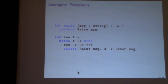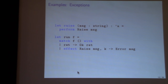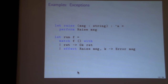A simple example is exceptions. There's one operation, raise, which takes a string and returns any type at all because it won't actually return. You can run that by matching: in the return case you return OK of the value, and if it performs a raise with a message you throw the continuation on the floor and return error of that message. This gives you the same basic behavior as traditional exceptions.